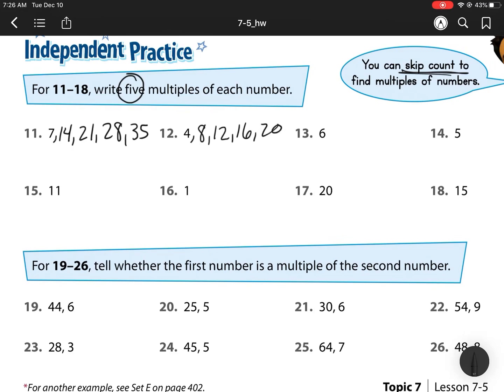Remember, how I'm getting each of these is I'm either adding this number to itself, or I know my multiplication facts of times 1, times 2, times 3, times 4, and times 5.